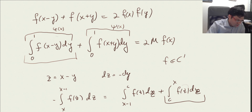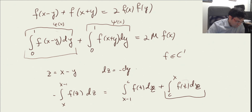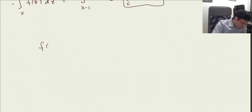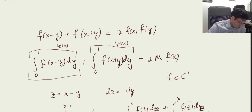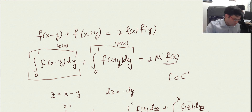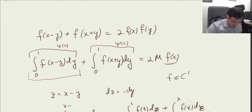Now we can show that f belongs to C∞. Since f is now continuously differentiable once, applying the same integration trick again gives φ and ψ that are twice continuously differentiable, making f twice differentiable. If f is twice differentiable, then φ and ψ are three times continuously differentiable, making f three times differentiable. Repeating this bootstrap argument, f is in C∞ — f is actually smooth.